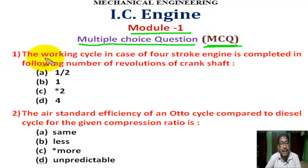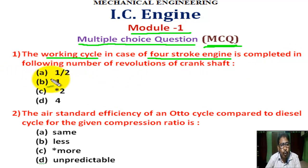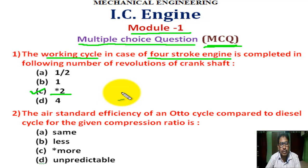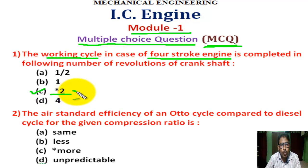Question number 1: The working cycle in case of a four-stroke engine is completed in how many revolutions of the crankshaft? There are four options. Correct answer is C — 2. A four-stroke cycle consists of four strokes: suction, compression, expansion, and exhaust. The number of revolutions of the crankshaft is 2.